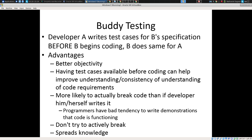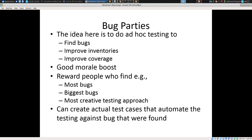Buddy testing: Developer A writes tests for B's specification before B begins coding, and B does the same for A. It provides better objectivity — I'm testing your code, which can also help critique the documentation. The developer who wrote the code generally tests it sympathetically — they want to show it works. Another developer will often try to really break it more than the original developer. And it can spread knowledge around because at least two people now know the code.